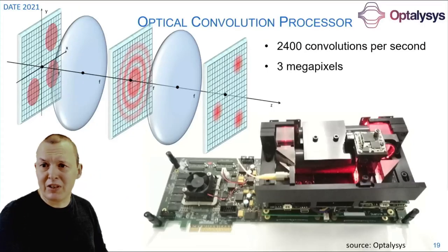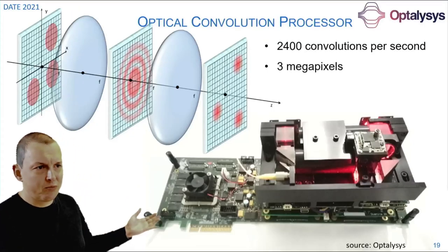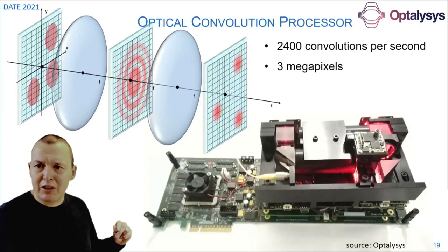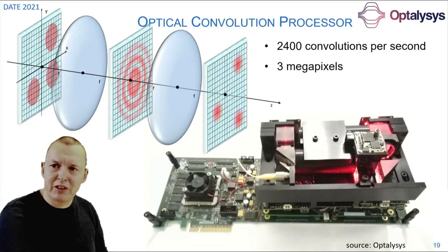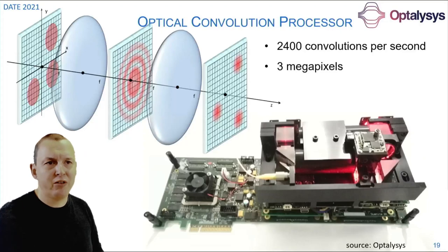Such a system has already been built. This is an example from the company Optalysis which has incorporated a full 4F optical system onto a plug-in card that you can plug into your computer to do real time very fast convolutions.